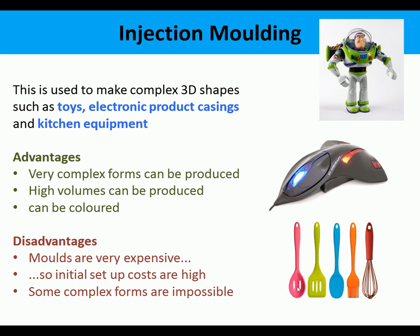The first process is injection molding, used to make complex 3D shapes such as toys, electronic product casings, and kitchen equipment. Advantages include the ability to produce very complex forms, high volume mass production, and colour can be built into the products. The disadvantages are that molds are expensive, so initial setup costs are high, and some very complex forms are impossible to manufacture.